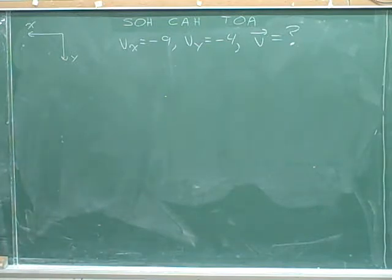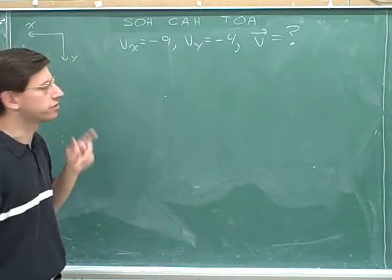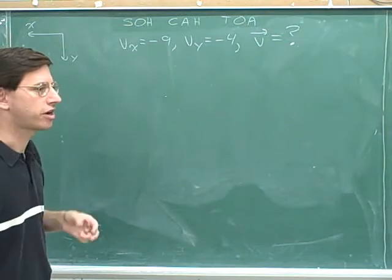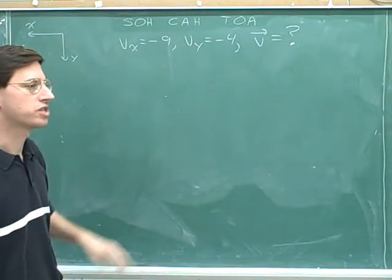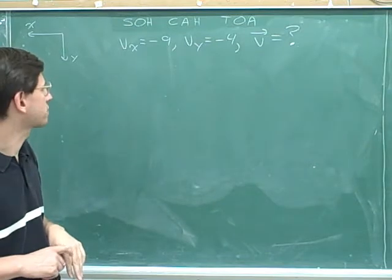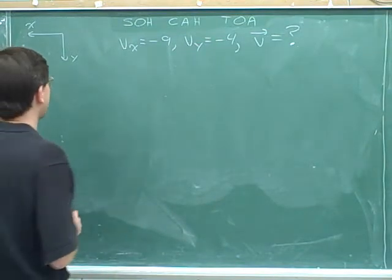Now I need to draw a right triangle that will show the components and the overall vector. I can start by showing the x component or the y component. Whichever you like. On this problem I feel like starting with the x component.